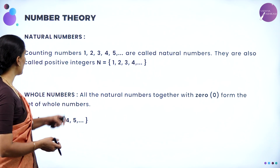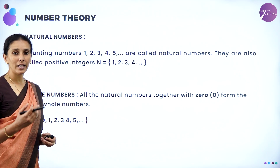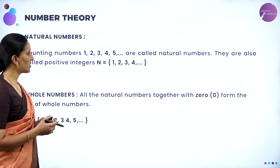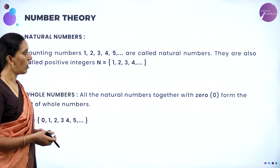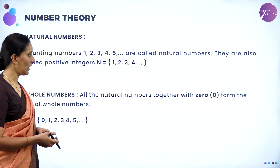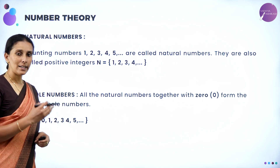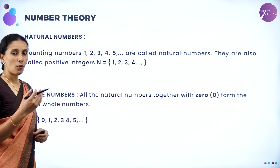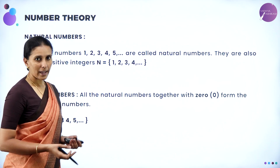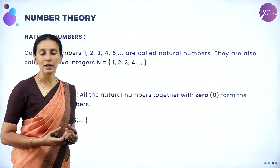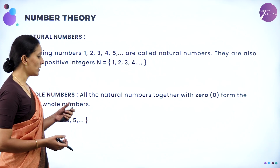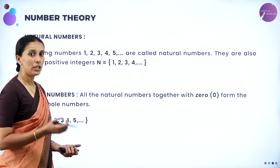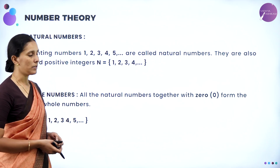The very first thing is natural numbers. We know that counting numbers are called natural numbers. The set which starts from 1, 2, 3, ... is called natural numbers, denoted by capital N. Next, the whole numbers: 0 along with the natural numbers are said to be whole numbers. The concept of 0 was introduced because when we say there is nothing, mathematically we say it as 0. The set containing 0, 1, 2, 3, 4, 5, ... denoted by W, is called whole numbers.